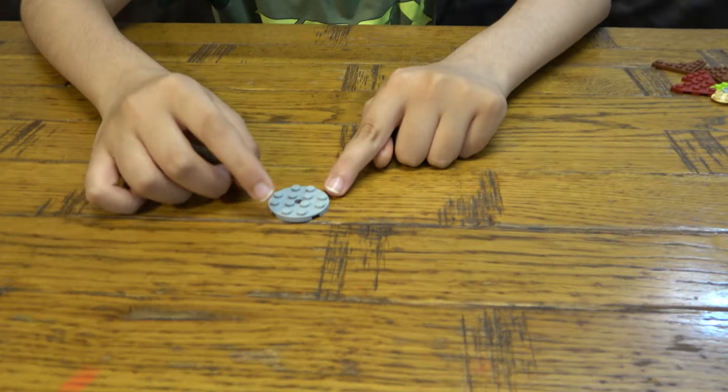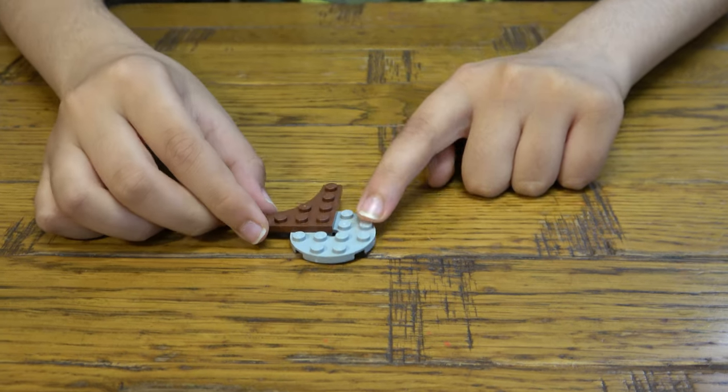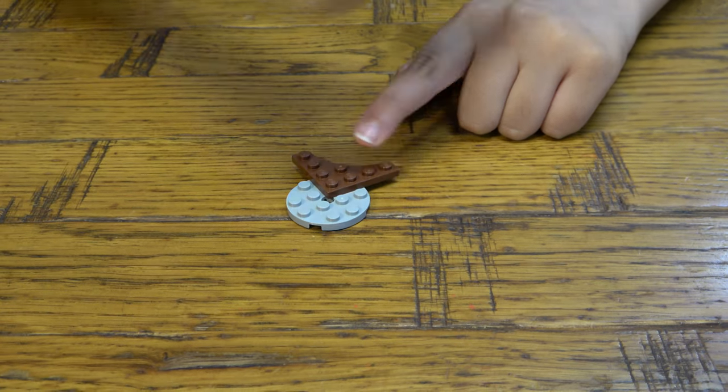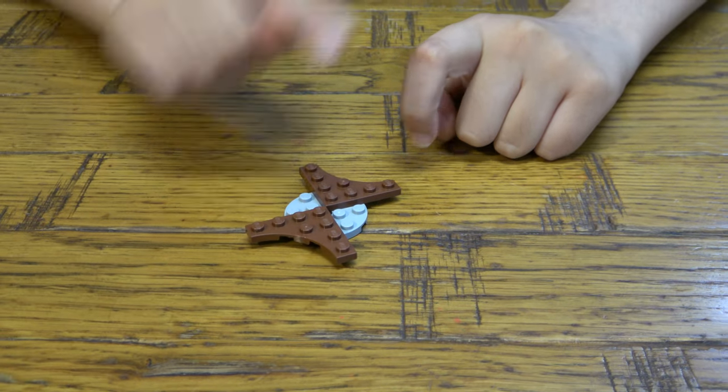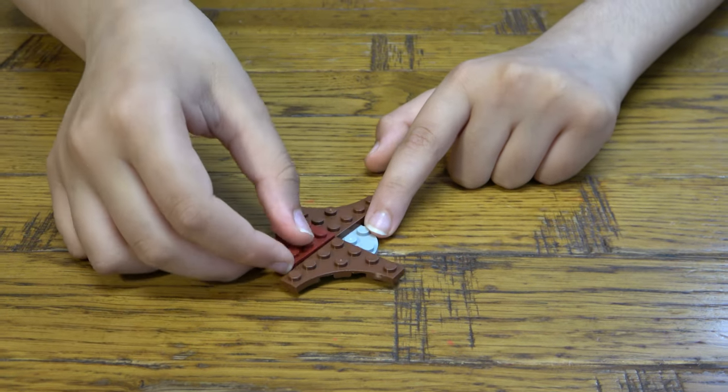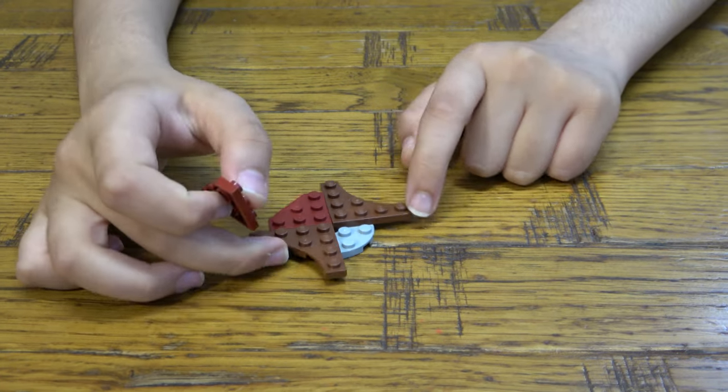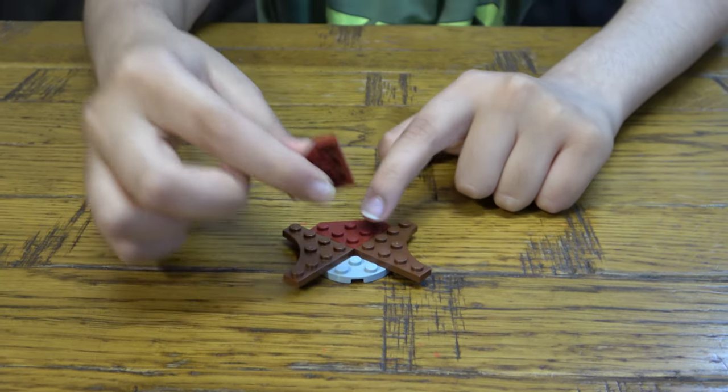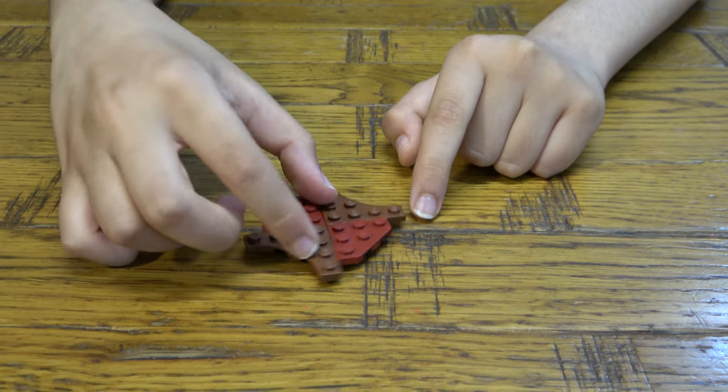First things first, we're going to get this grey cylinder piece. This is going to hold the Beyblade together. We're going to get these two circle outline pieces, I don't know what you call them, because if you put four of them in a square, it makes a circle. And then this is basically the base shape.